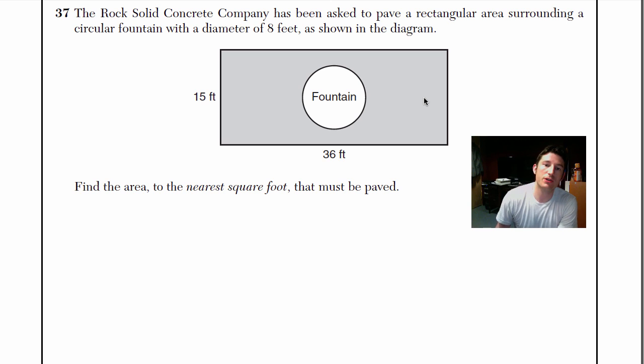It says the rock-solid concrete company has been asked to pave a rectangular area surrounding a circular fountain with a diameter of 8 feet as shown in the diagram. I got the picture here. Find the area to the nearest square foot that must be paved. When you get a question like this, you're looking at a big rectangle minus a circle. That's going to give you this shaded region. Anytime you want a shaded region, it's the big shape cutting out the little shape.